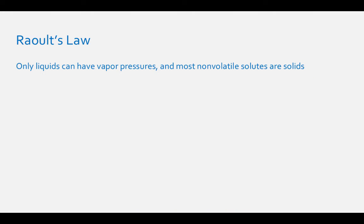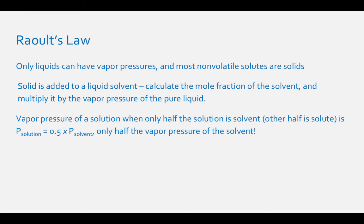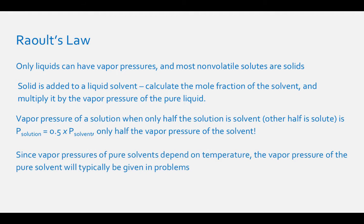Only liquids can have vapor pressures, and most non-volatile solutes are solids. So to determine what happens to the vapor pressure when a solid solute is added to a liquid solvent, we need to consider the liquid solvent by calculating its mole fraction and multiplying it by the vapor pressure of the pure liquid. For example, if we add a mole fraction of 0.5 solvent, then the vapor pressure will be half that of the pure solvent. Note that the vapor pressure of the pure liquid will change with temperature. Usually in problems involving Raoult's Law, they will give you the vapor pressure of the pure liquid.